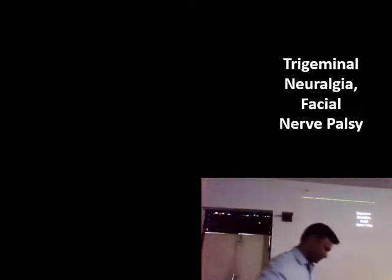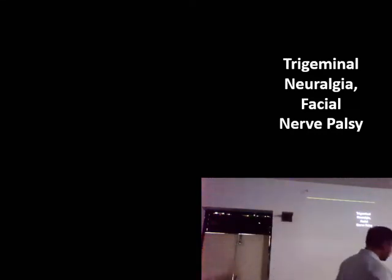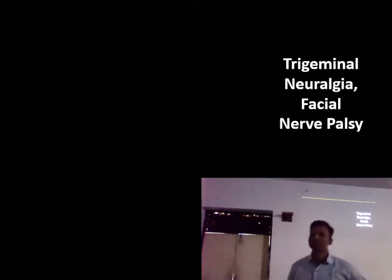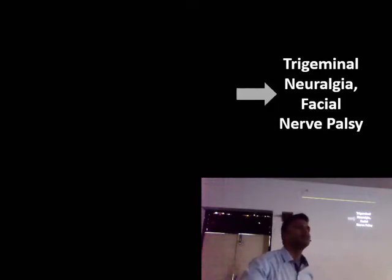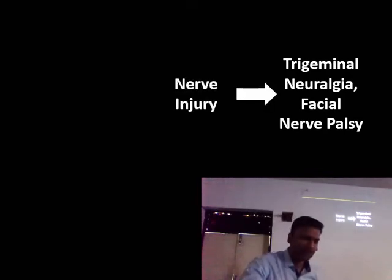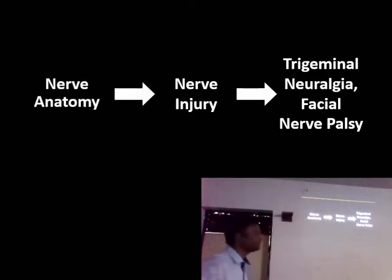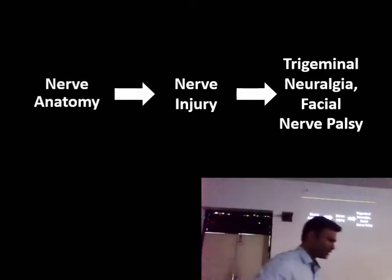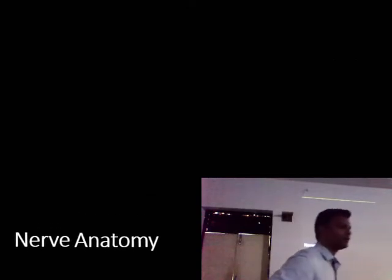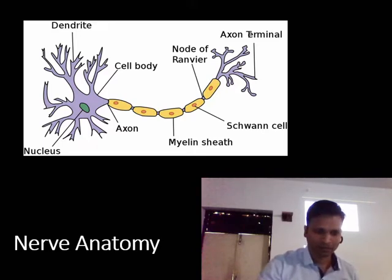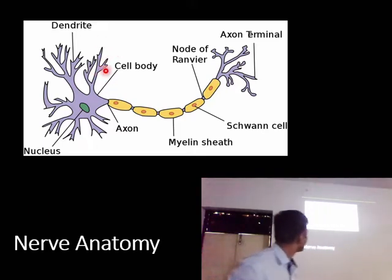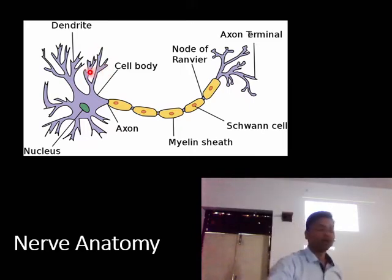The actual aim of this lecture series is that you understand two conditions: trigeminal neuralgia and facial nerve palsy. But before that, you need to understand what nerve injury is, and to understand nerve injury, you need to understand nerve anatomy. So we'll start with the nerve anatomy part.